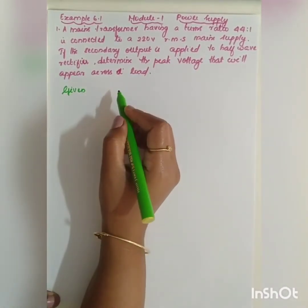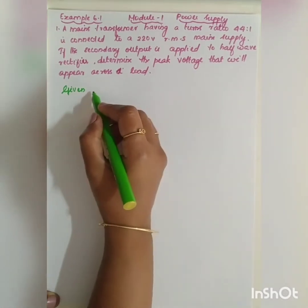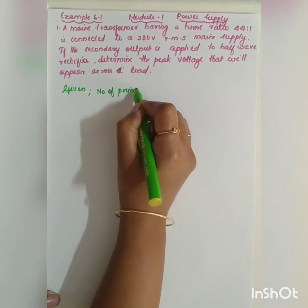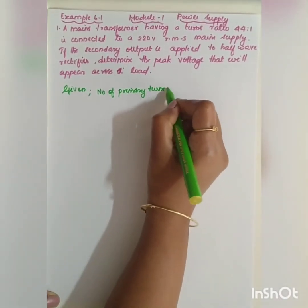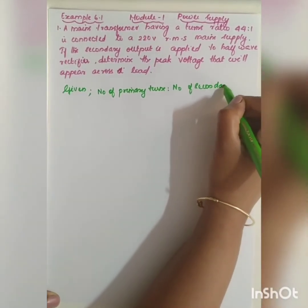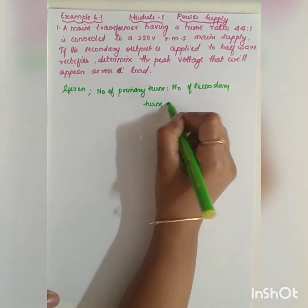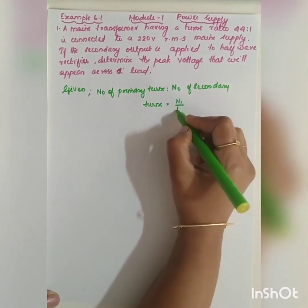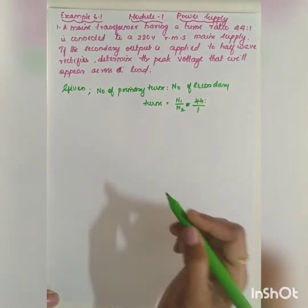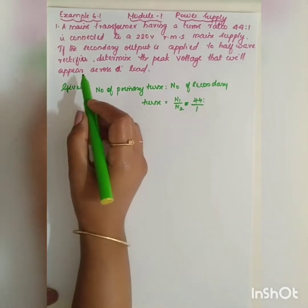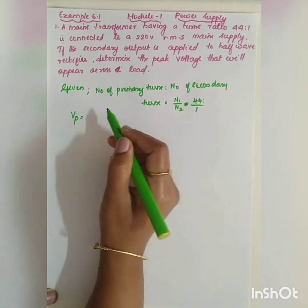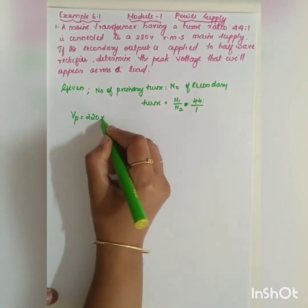Given: the mains transformer has a turns ratio where the number of primary turns to number of secondary turns, N1 divided by N2, is equal to 44 to 1. It is connected to a 220 volt RMS main supply, so the primary voltage VP is equal to 220 volt.